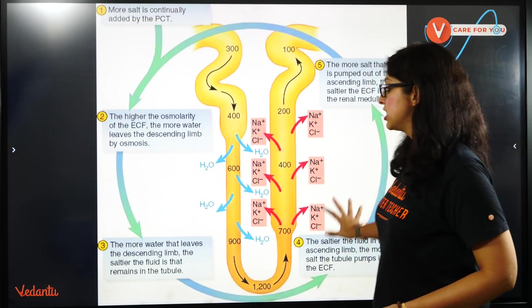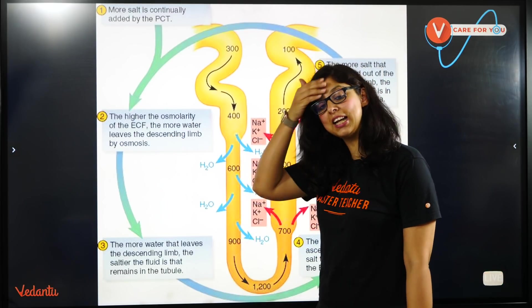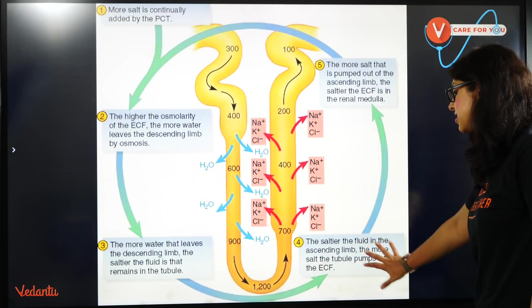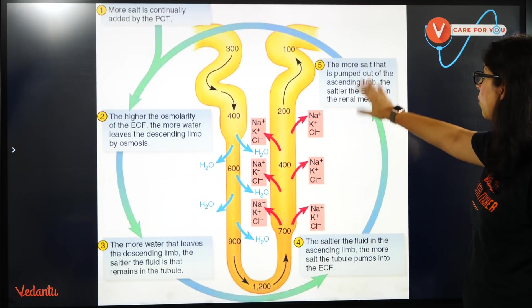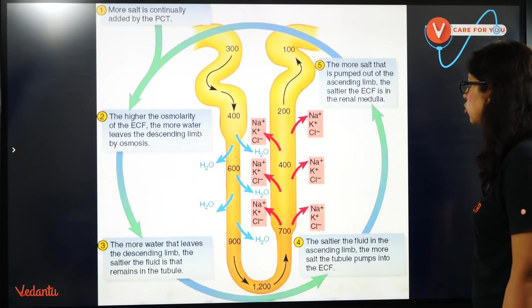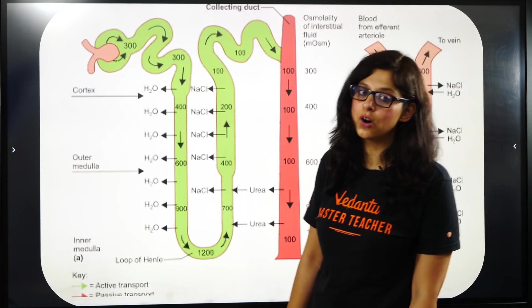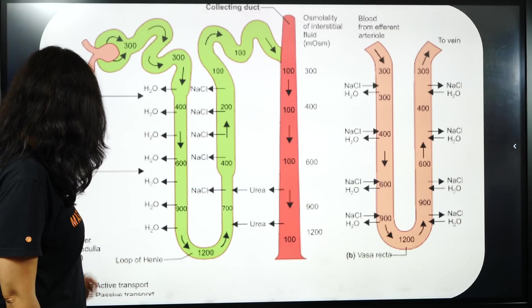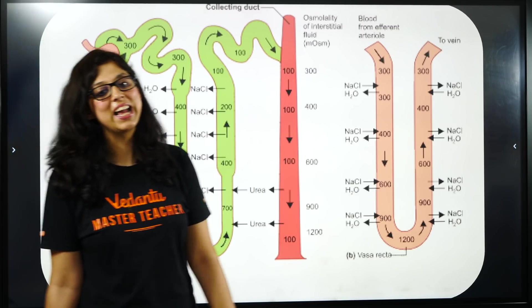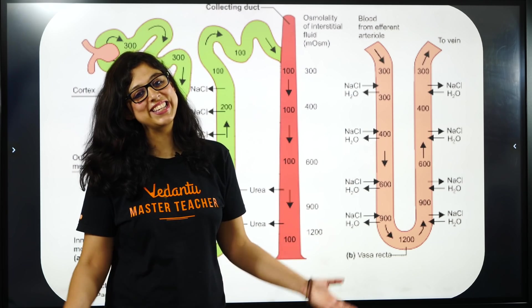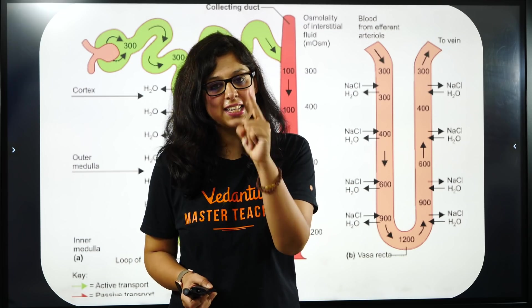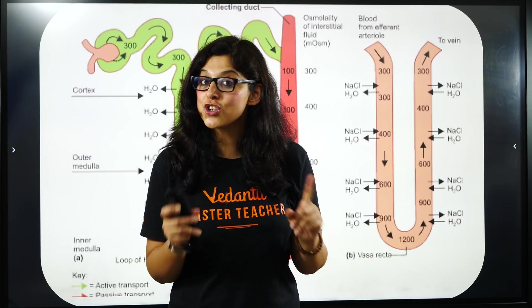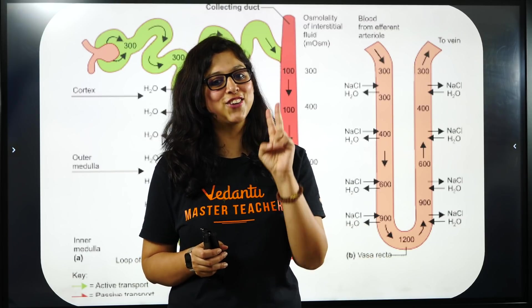So if I have to tell you in a way — जब extracellular fluid की osmolarity बढ़ती है, that means salt बढ़ता है, तो obviously water जो है वो बाहर आ जाता है. And as the outside becomes saltier, more and more water will come out. So this is how the counter current mechanism works. यह diagram भी आपको वही बता रहा है — Vasa recta और loop of Henle inner medulla में — और कैसे हम concentrated urine को body से expel करते हैं. I hope you've been able to understand the lines about urea and sodium chloride. That's all from the session today — make sure you are liking, sharing, subscribing. Bye!